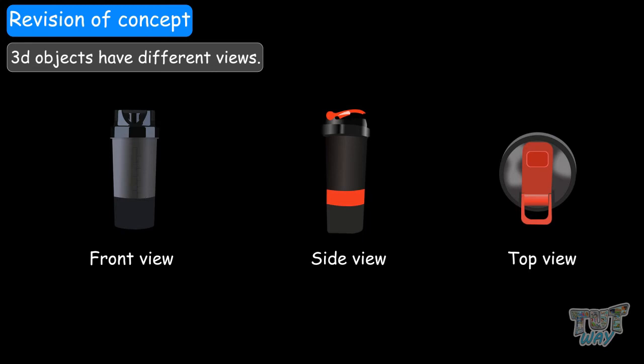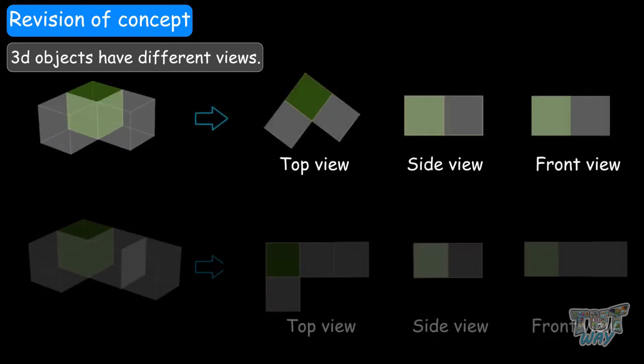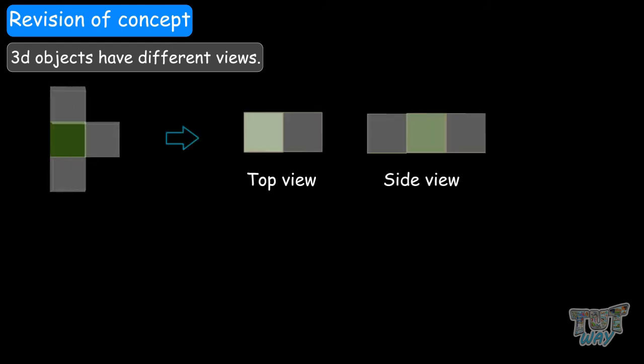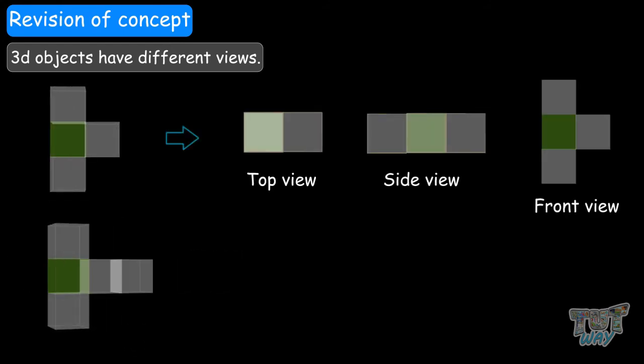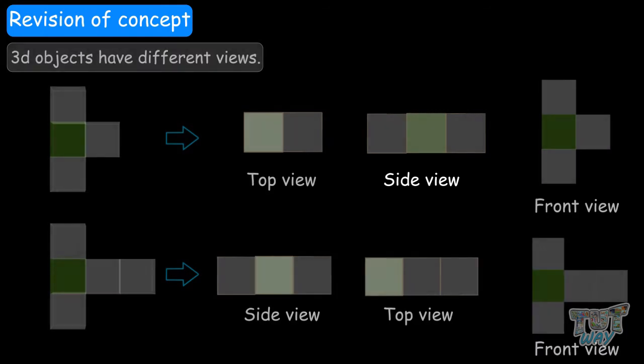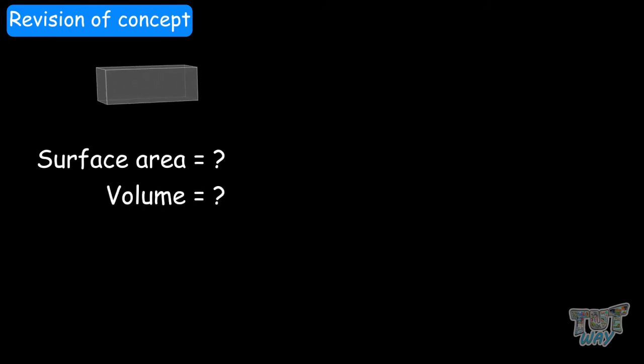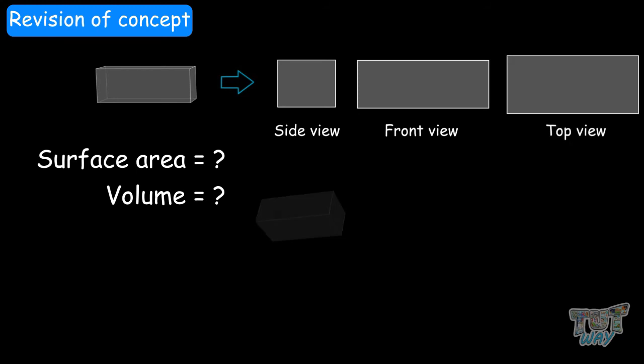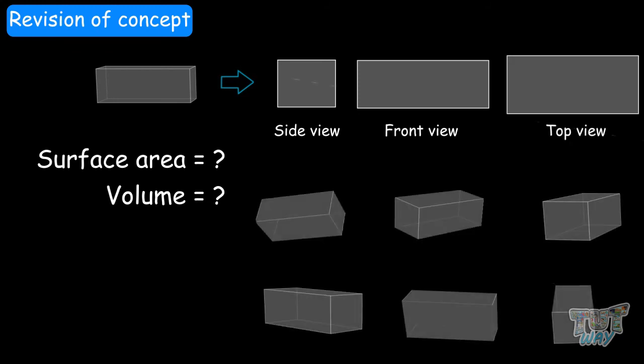Then we examined some objects made up of cubes — they all have three different views. So you always need to examine an object properly to determine what its side, top, and front view are, because sometimes you will have to find out the surface area or volume of an object whose views are not all visible. You need to be able to imagine its different views to calculate the surface area or volume accordingly. We will be doing such problems in our next section.